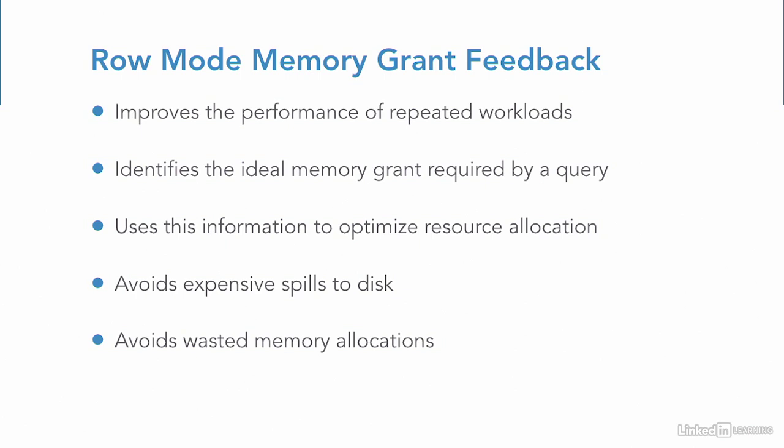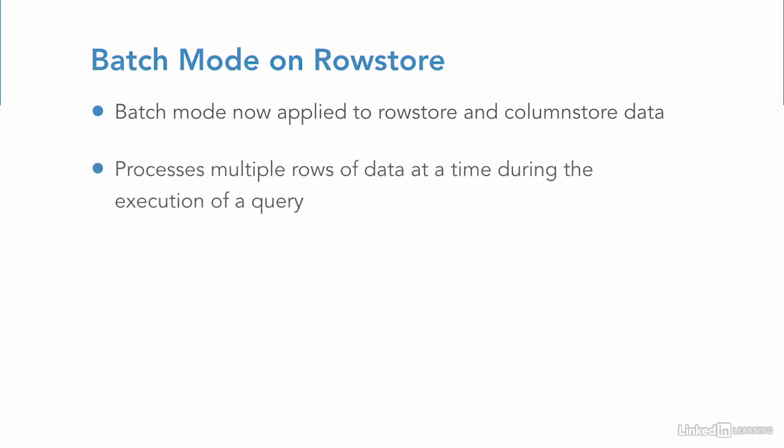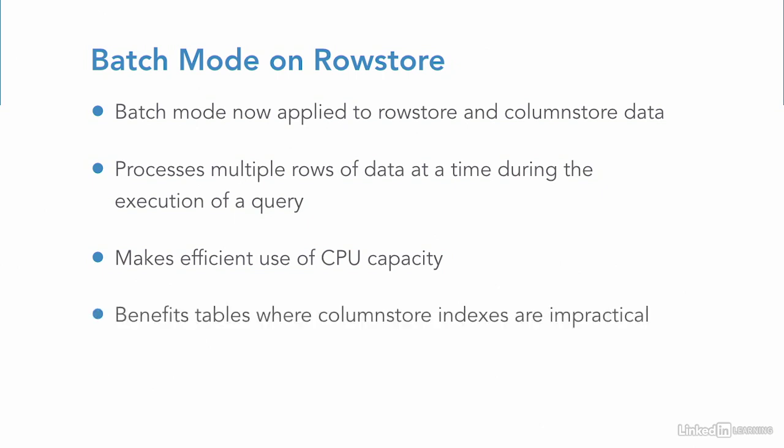Speaking of batch mode operations, they've now been expanded to work on row store data in addition to tables with a column store index. With batch mode, query operations can process batches of rows at once rather than working on a single row at a time. This makes better use of CPU processing capacity and benefits queries with multiple joins and aggregate functions. This update enables the same performance enhancements on tables where column store indexes would be too costly to implement.